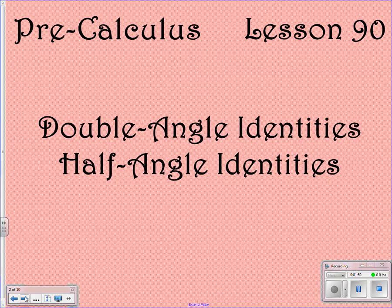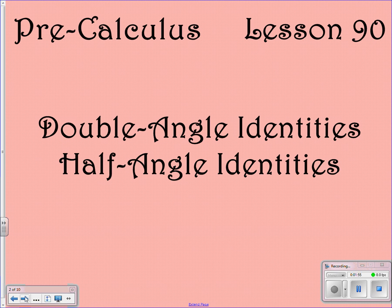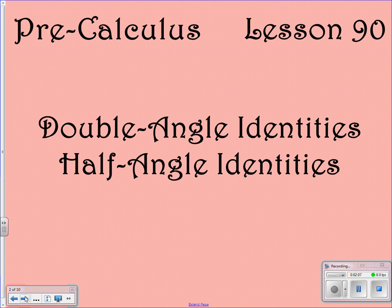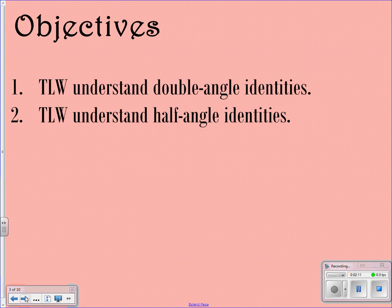We are looking at lesson 90 today. We did skip lesson 89 because we actually covered that back with lesson 71 towards the beginning of January. So we're skipping over to lesson 90, and we're dealing with double angle identities and half angle identities. Hopefully you'll understand your double and half angle identities after this lesson.